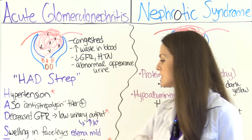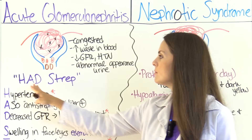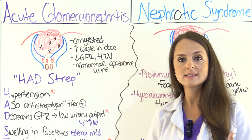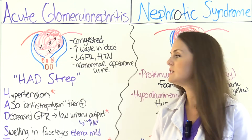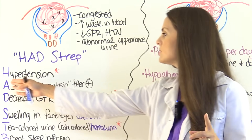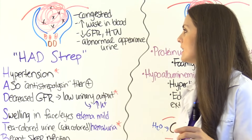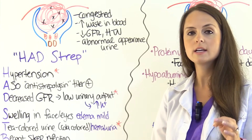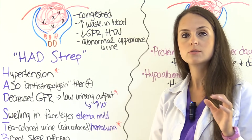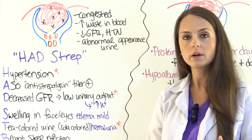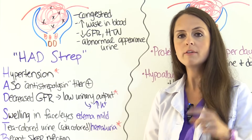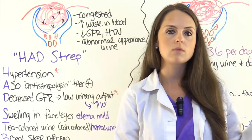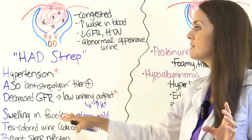To help remember the signs and symptoms of acute glomerulonephritis, use the mnemonic HAD STREP, because a post-streptococcal infection is the main cause. H is for hypertension, which is because of that decreased GFR and extra blood volume since the kidneys aren't working appropriately. Hypertension is rare in nephrotic syndrome but much more common with acute glomerulonephritis.